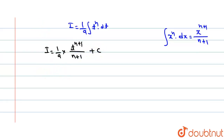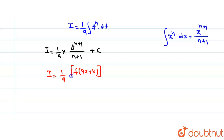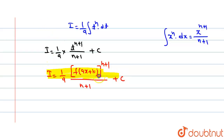Now put back t = f(ax + b). So I = (1/a) · [f(ax + b)]^(n+1) / (n+1) + C. This is our final integration of question number two.